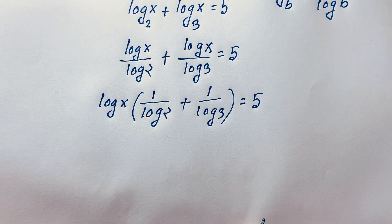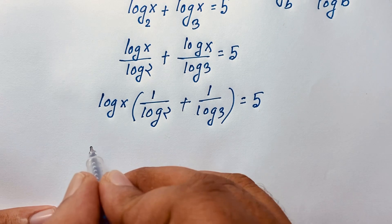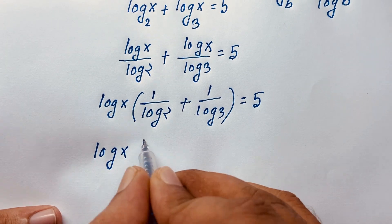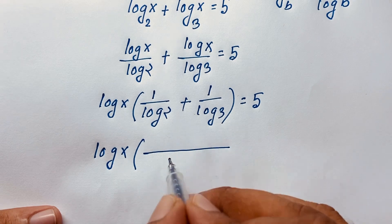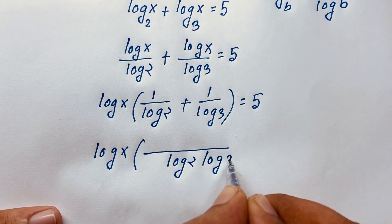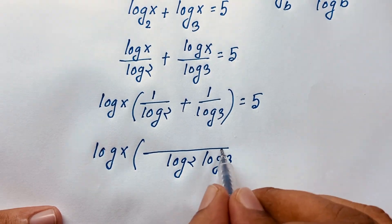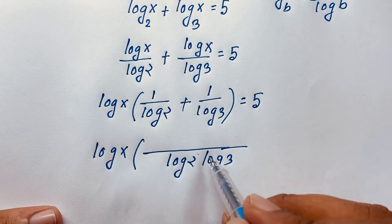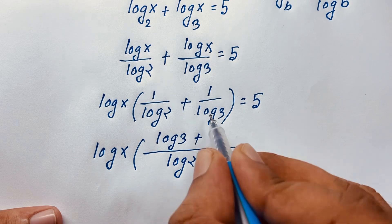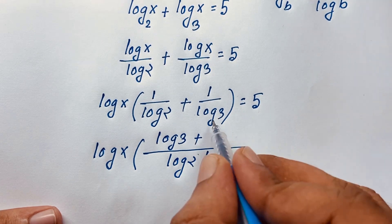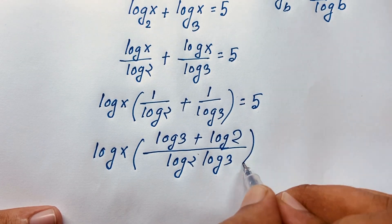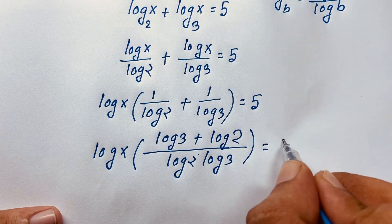Now, the least common denominator here is log 2 times log 3. Combining the fractions: log x times (log 3 plus log 2) over (log 2 times log 3) is equal to 5.